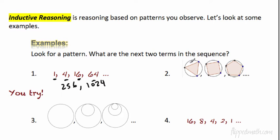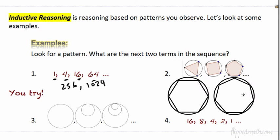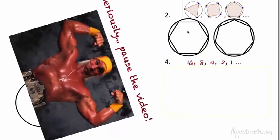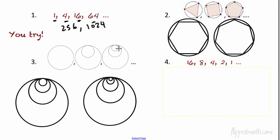Number two has shapes instead of numbers: circle, triangle, square, pentagon. You just look for patterns — they have 3, 4, 5 different points, so the next ones would be a hexagon and then a heptagon, with six and seven points respectively. You could shade the inside if you want. Now pause the video and try numbers three and four. For number three, you keep drawing circles, each half the size of the smallest one — they're tangent, meaning they touch.